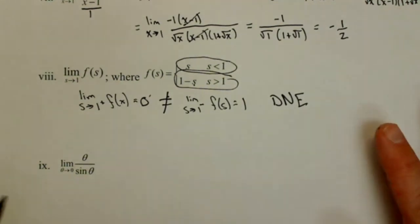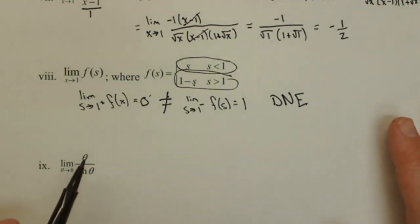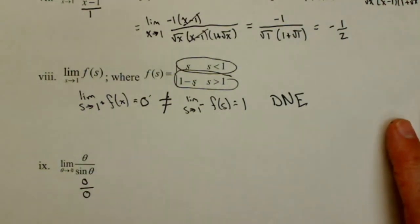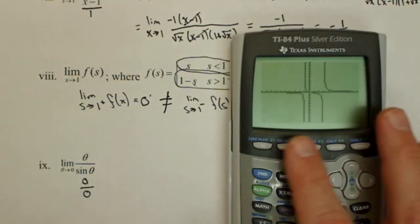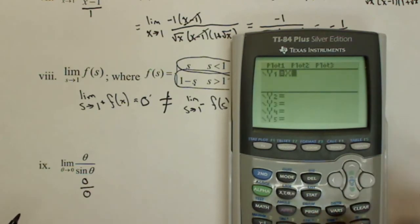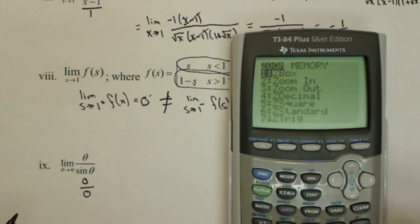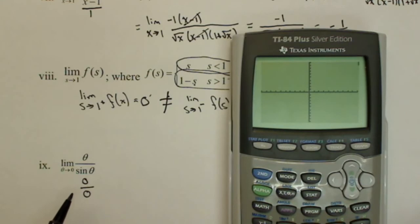The last one, we actually are going to see later this semester how to do it with calculus, but let's talk about how we do this one right now. Limit as theta goes to 0, if I plug it in, I get 0 on top, and sine of 0 is 0, I get 0 on bottom, I get an indeterminate form. Well, let's take a look at this guy with our calculator. So we're going to put in x divided by sine of x, and we should just need a standard window. Remember what we're doing, we're looking for the limit at 0.